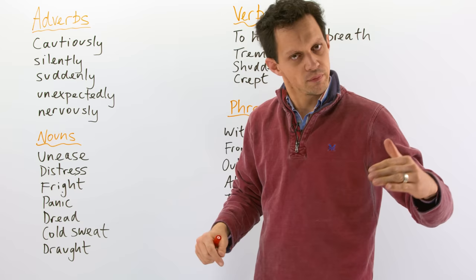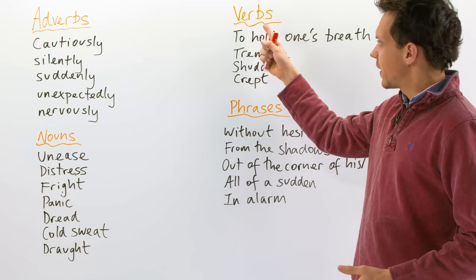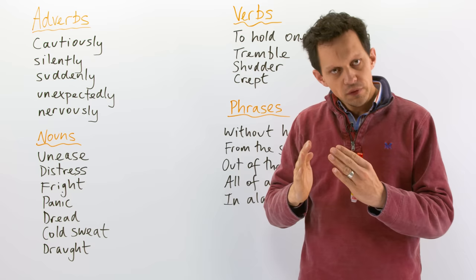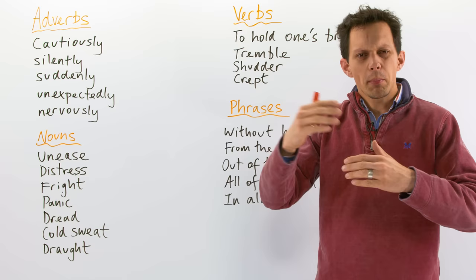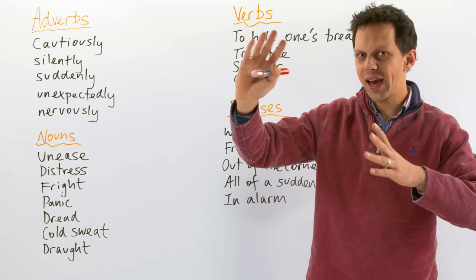So we're going to link the verbs with the adverbs. I should first off explain what exactly these types of stories are. We're looking at suspense stories. This is a story in which something dangerous, something scary remains hidden. We don't quite know what it is, but there's something out there in the dark that may do something scary.